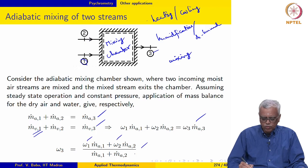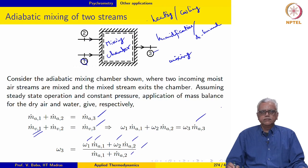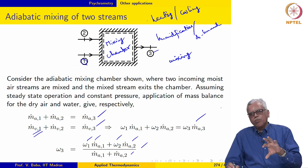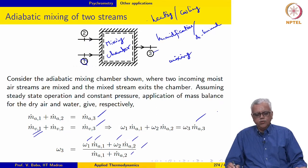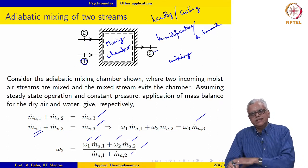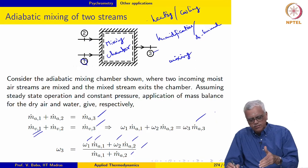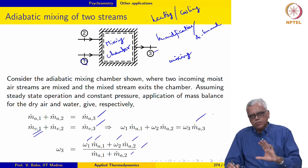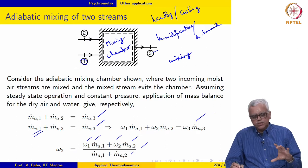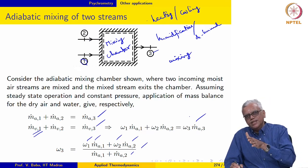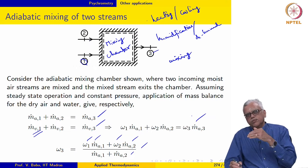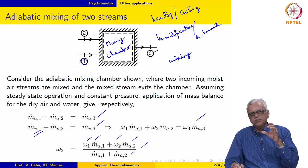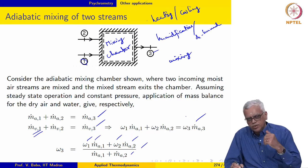Writing this in terms of omega using the definition of humidity ratio, we can derive an expression for omega-3, the humidity ratio of the exiting stream. If omega-1, omega-2, and the mass flow rates are known, omega-3 may be evaluated. Alternatively, if a certain omega-3 is desired, omega-2 may be evaluated from this expression.